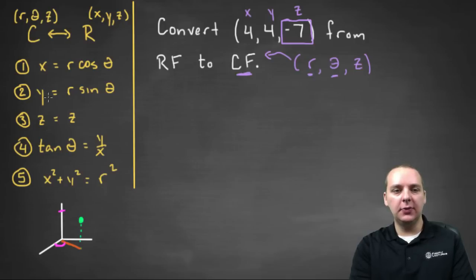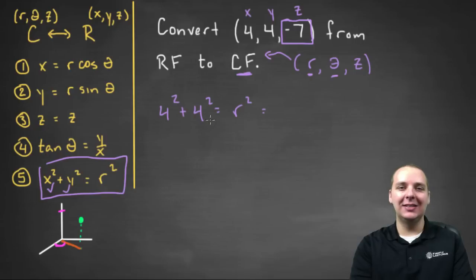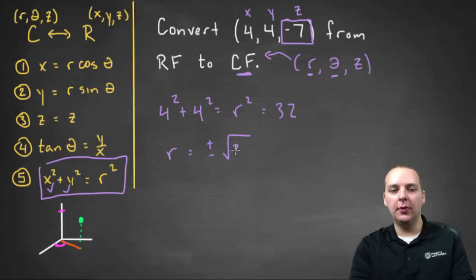So let's look through this list here and see if we can find some sort of conversion for R or theta. I think we can use number five right here to get our R value because we have X and Y. So X squared plus Y squared equals R squared. Four squared is sixteen, sixteen and sixteen make thirty-two. So R squared equals thirty-two, which means R is plus or minus the square root of thirty-two, which if we simplified that, that would be four root two, plus or minus four root two.